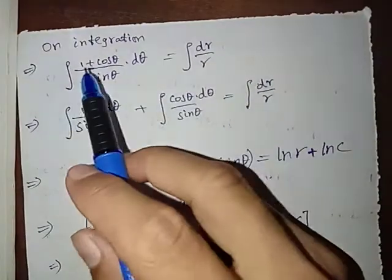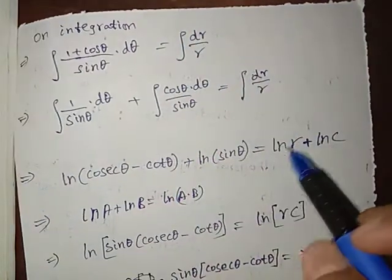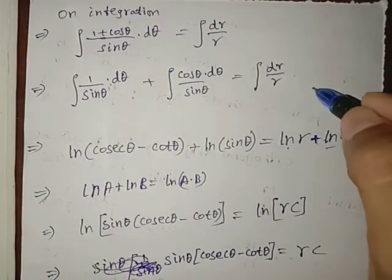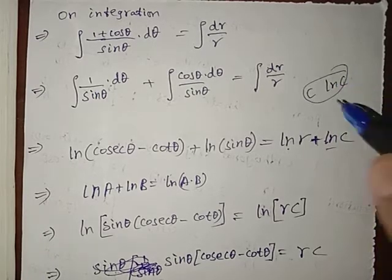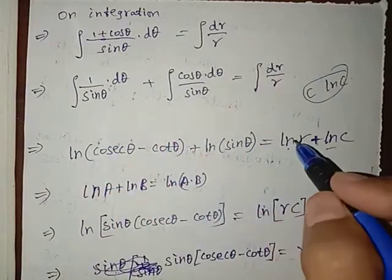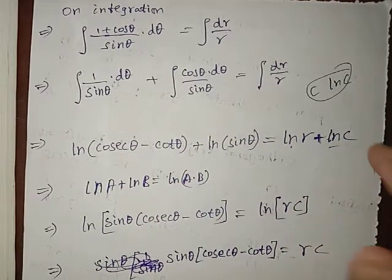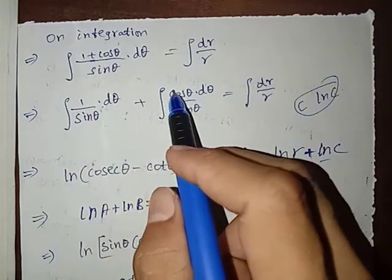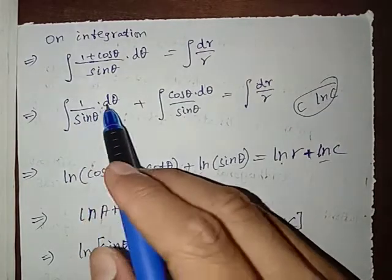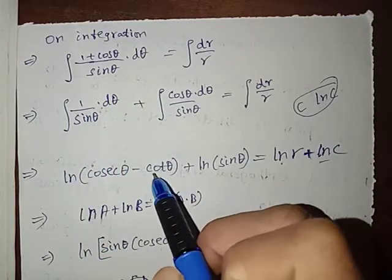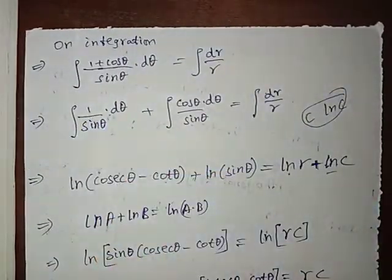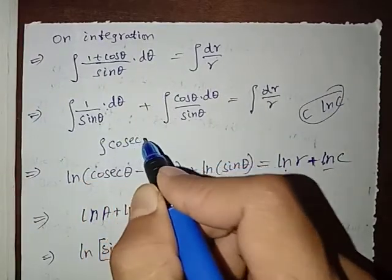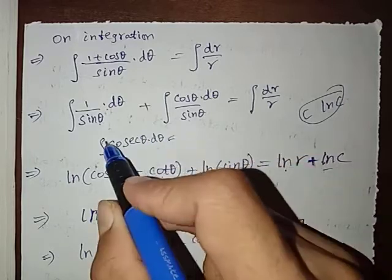On integration, the left side gives ln r plus a constant, which we write as ln c for convenience. The right side is (1/sinθ + cosθ/sinθ) dθ. The integral of 1/sinθ dθ equals ln|cscθ − cotθ|.